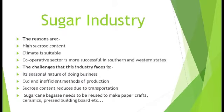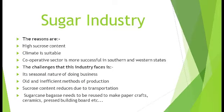Let us discuss some challenges faced by the sugar industry in India. Its seasonal nature of business and old, inefficient methods of production are still in practice, with no use of high-tech machinery. Due to transportation delays in reaching cane to factories, the sucrose content gets reduced, affecting sugar quality. There is also a need to maximize the use of bagasse — the waste product during sugar extraction — which could be reused to make paper, ceramics, pressed building materials, etc.